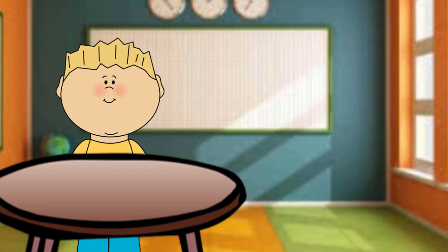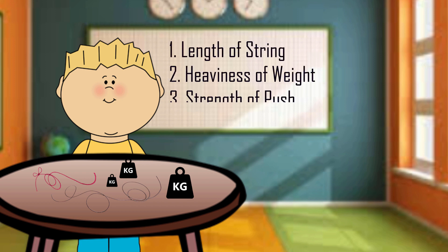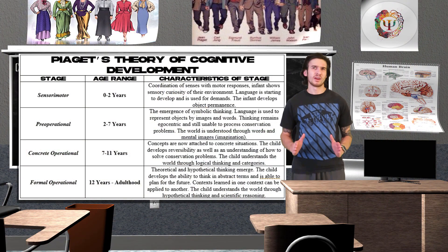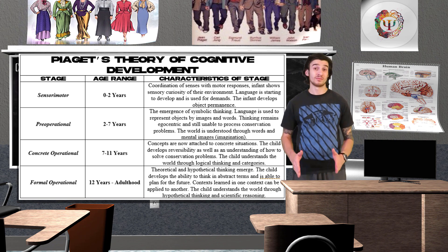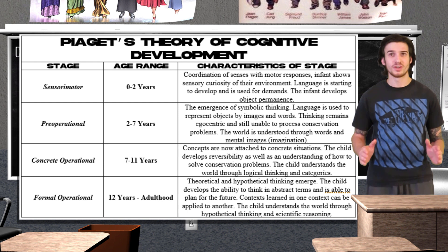Piaget tested this stage of development using the pendulum task — a pendulum being a weight hung from a fixed point so that it can freely swing back and forth. Children were tasked with creating a pendulum that would swing the fastest, and were presented with several strings and weights, having to consider three variables: the length of the string, the heaviness of the weight, and the strength of the initial push. Piaget found that children in the formal operational stage would approach the task systematically, testing one variable at a time, while younger children would randomly change multiple variables at once. He concluded that this scientific approach is characteristic of formal operational thought.